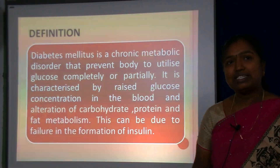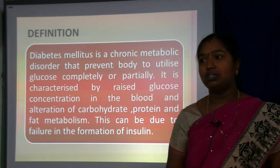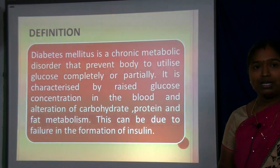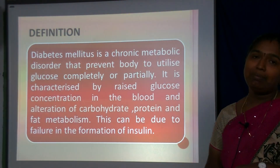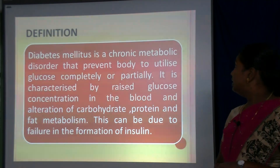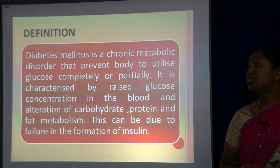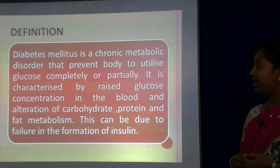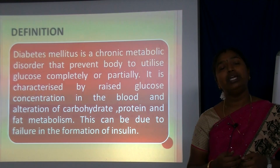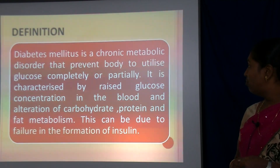Diabetes mellitus is a chronic metabolic disorder that prevents the body from utilizing glucose completely or partially. It is characterized by a rise in glucose concentration in the blood and alteration of carbohydrate, protein and fat metabolism in the body.